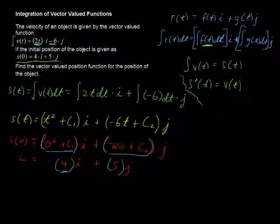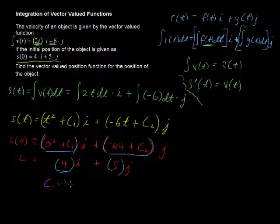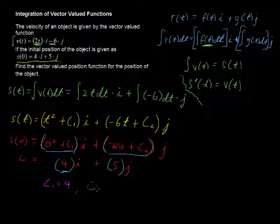And 0 plus c2 has to equal 5. So, we get some solutions there. We get that c sub 1 equals 4, and c sub 2 equals 5.